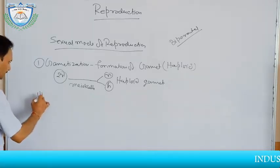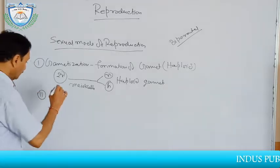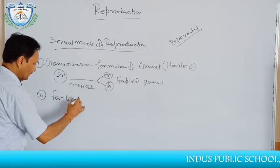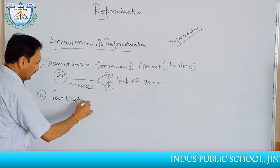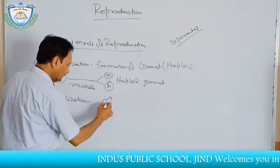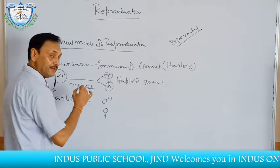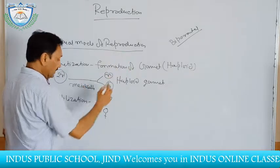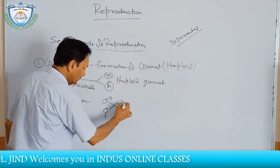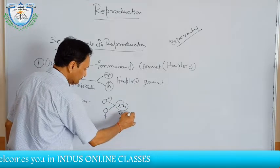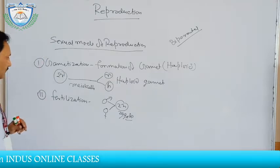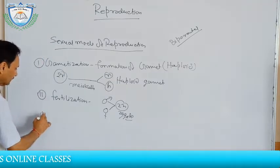The second step of the sexual mode of reproduction is fertilization, which means when two gametes — one male gamete and one female gamete — fuse to form a diploid zygote. After zygote formation, embryonic development takes place.